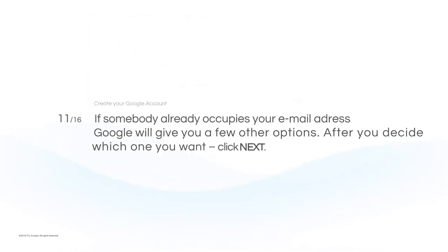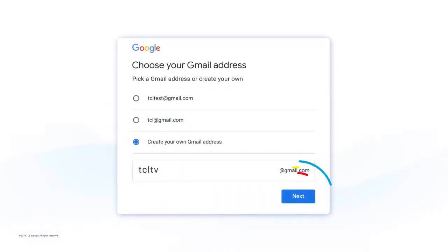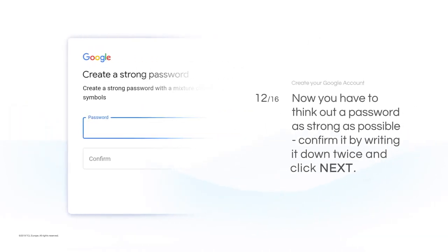If somebody already occupies your email address, Google will give you a few other options. After you decide which one you want, click Next. Now, you have to think of a password as strong as possible. Confirm it by writing it down twice and click Next.